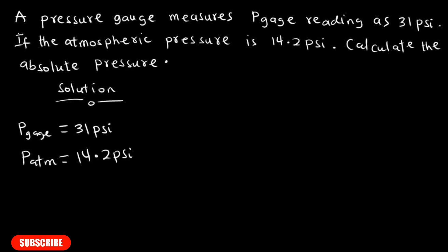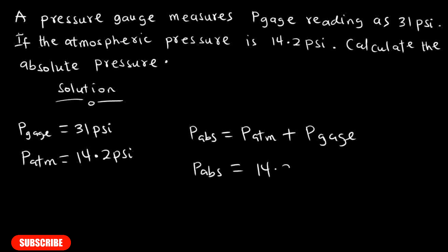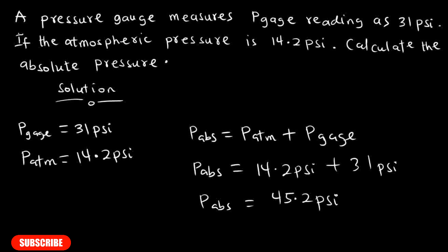We learned that the relation between absolute pressure, atmospheric pressure, and gauge pressure is: P_abs = P_atm + P_gauge. We have been given both values, so substituting: 14.2 psi plus 31 psi gives us 45.2 pounds per square inch. That is the answer to this question.